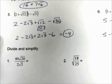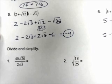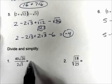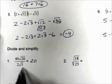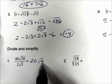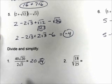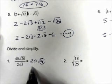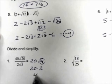Number 1, we have 40 square root of 20 divided by 2 square root of 5. We'll divide 40 by 2, which is 20. Square root of 20 divided by the square root of 5 is square root of 4. And simplify — the square root of 4 is 2, so 20 times 2 is 40.